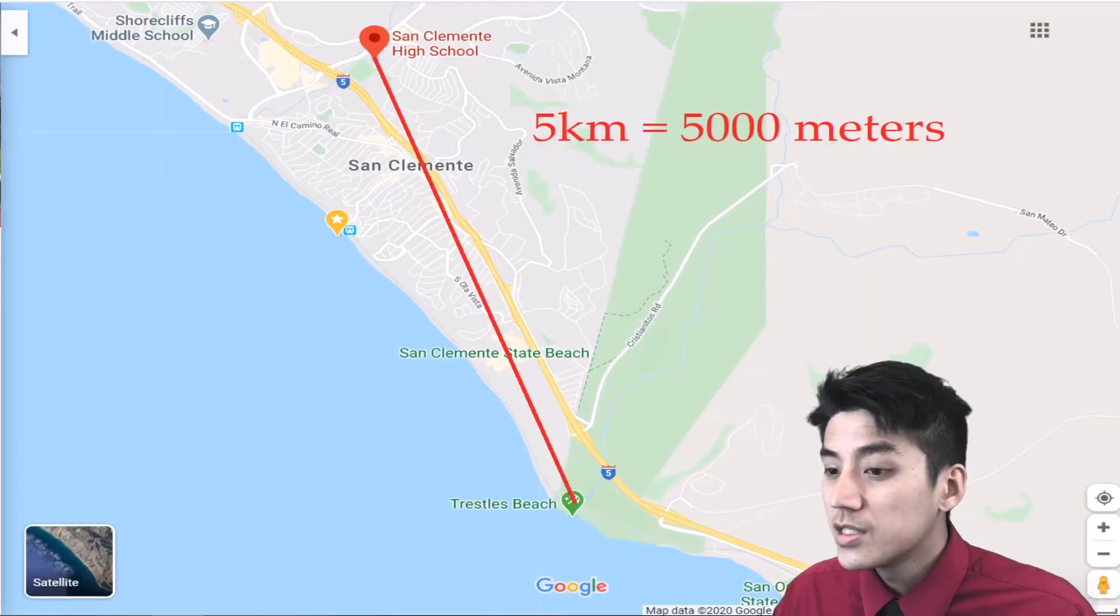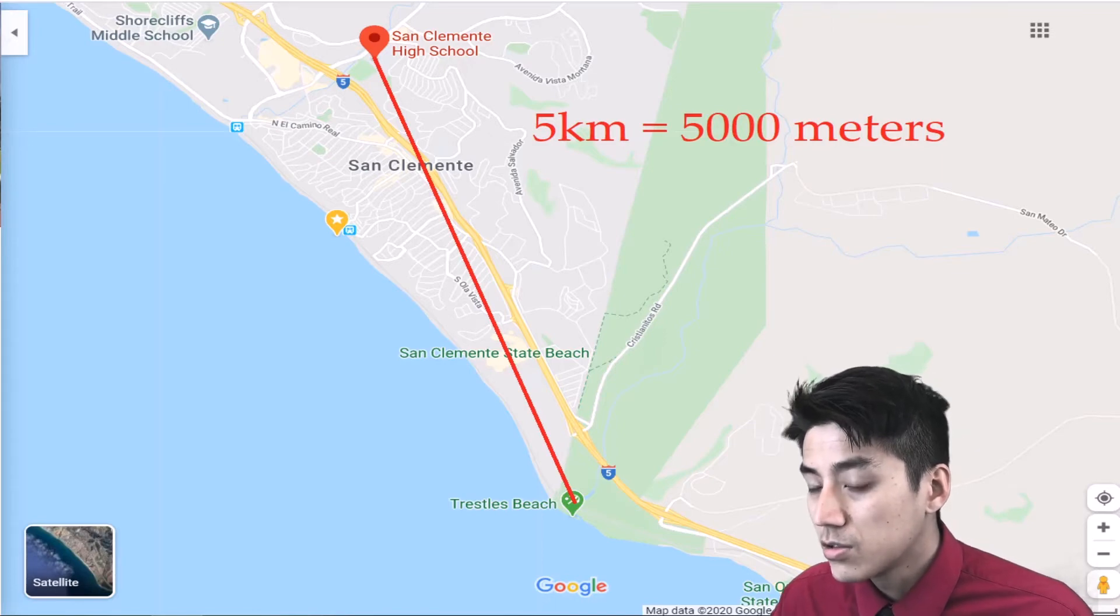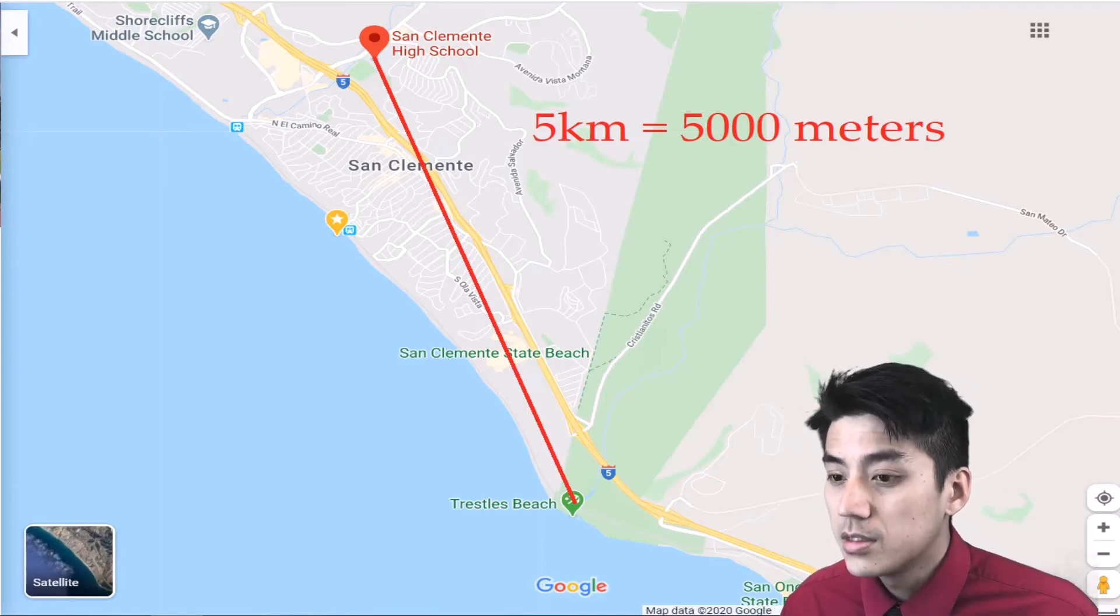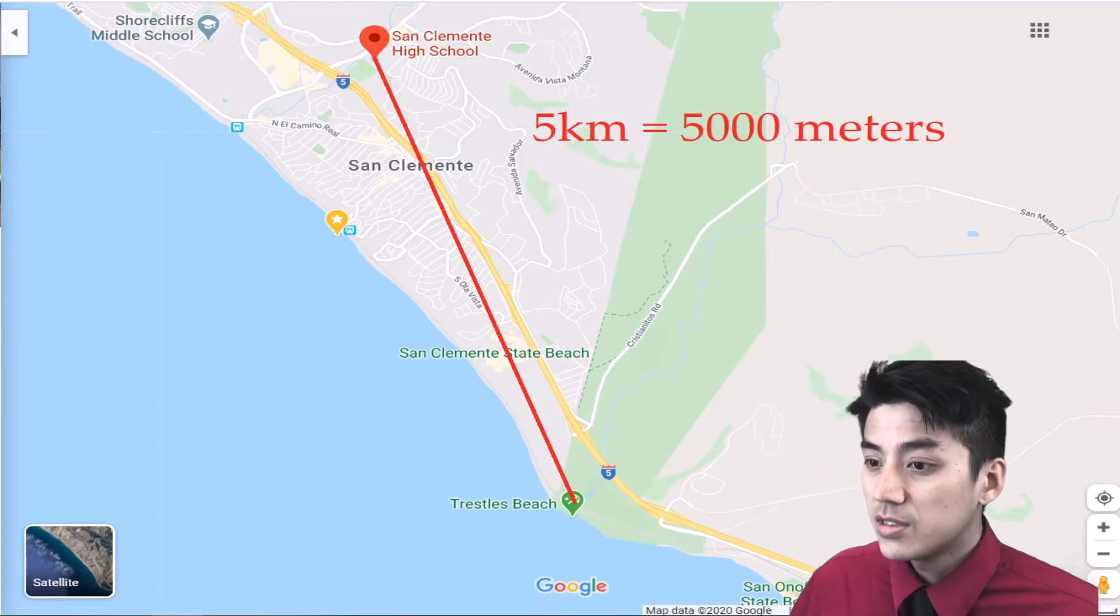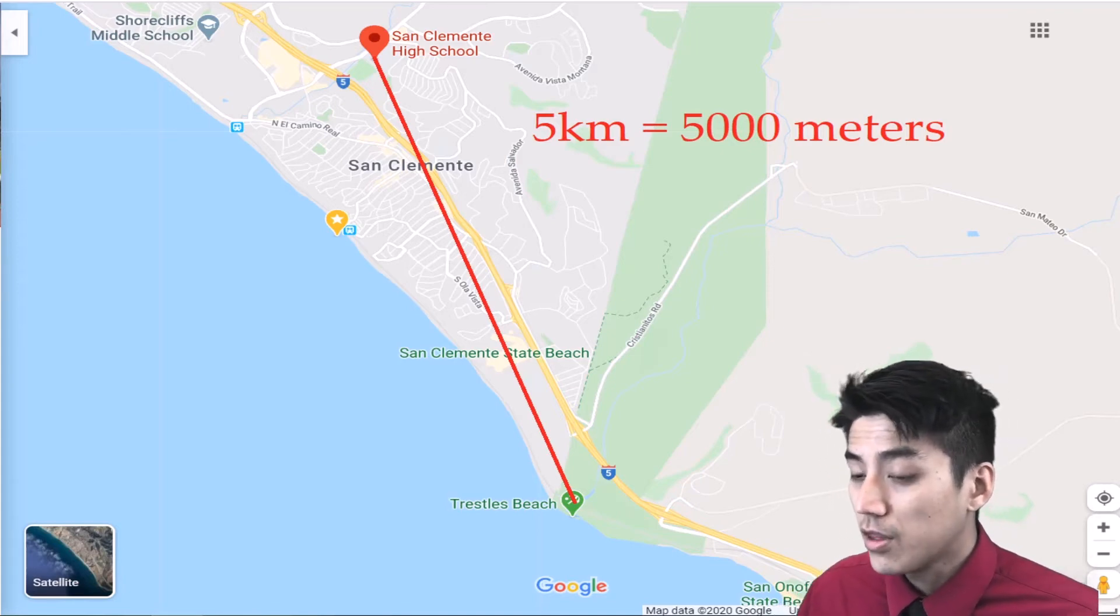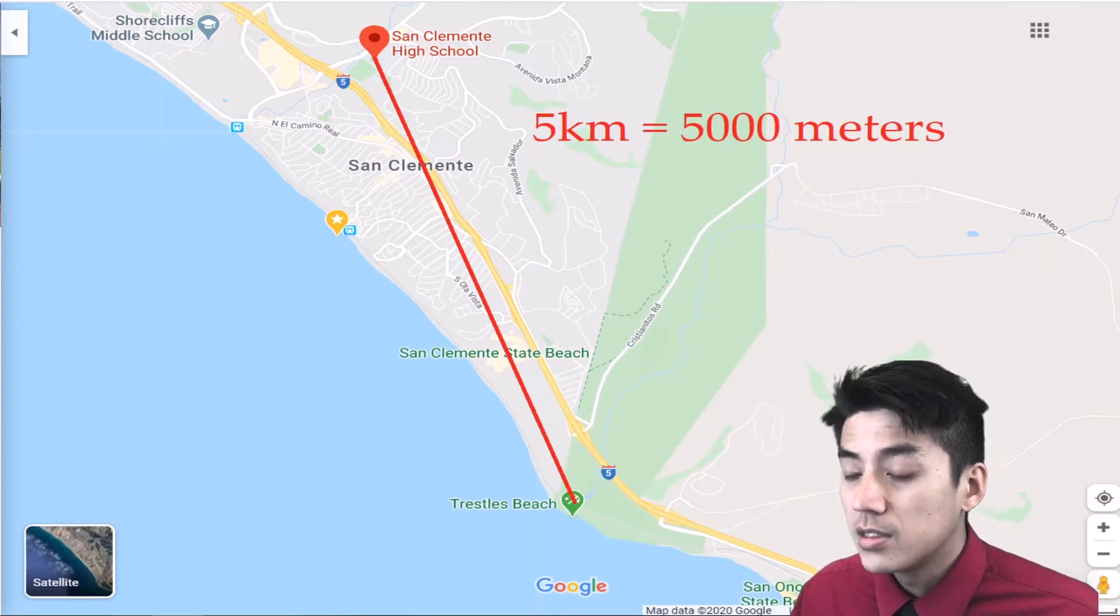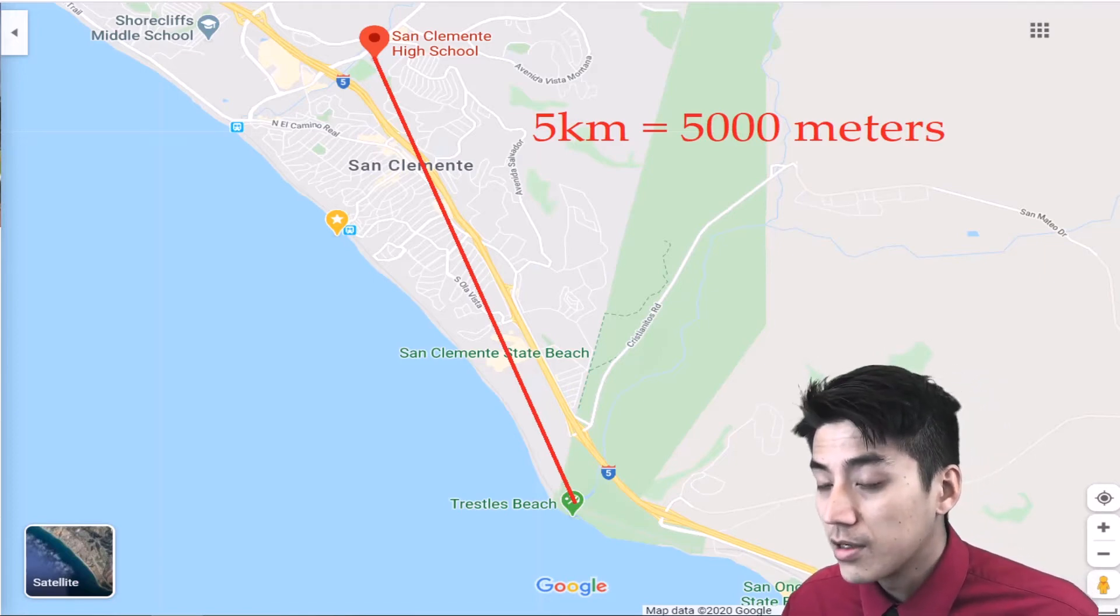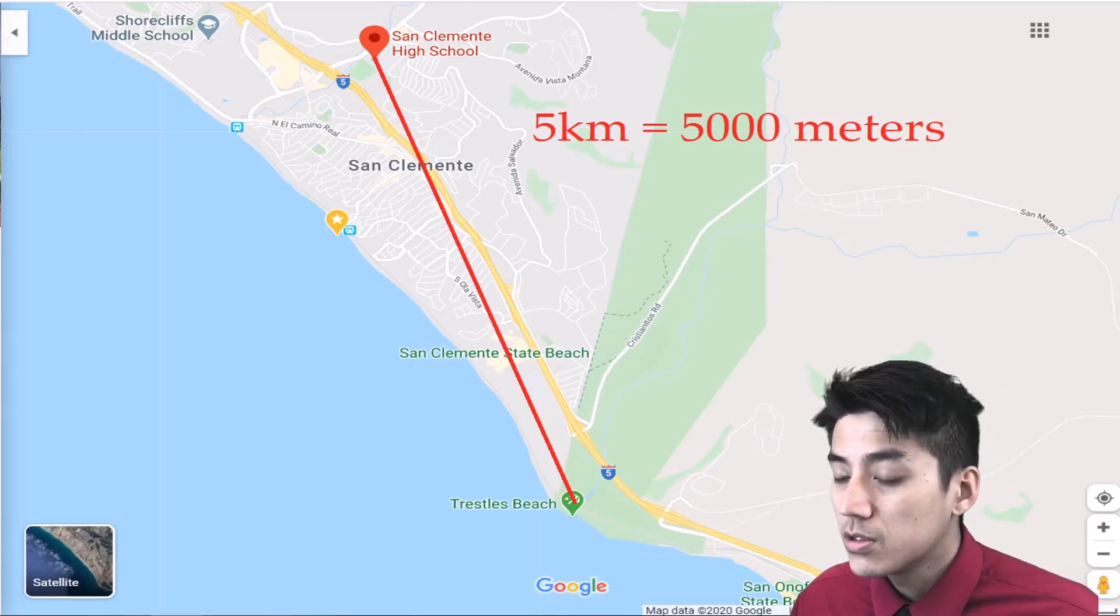Now ask yourself, does the answer make sense? I have Santa Clemente High School and I have Trestles Beach, and I drew a line across. That distance is roughly 5 kilometers, and our answer was 5,000 meters. So if I stack 5,000 meter sticks - and a meter is roughly like 3 feet, 3 inches, a little bit longer than a yard - if I stack 5,000 meters together, that should cover the distance between San Clemente High School and Trestles Beach.